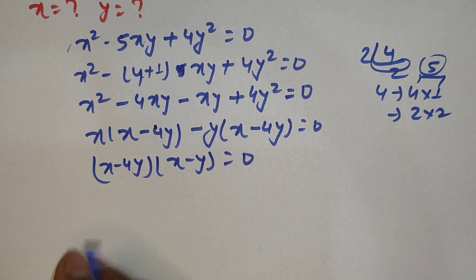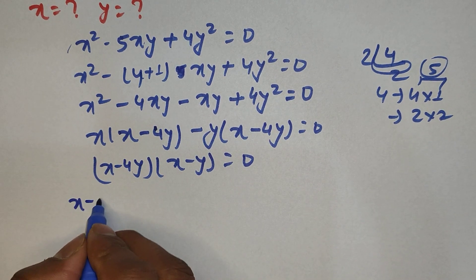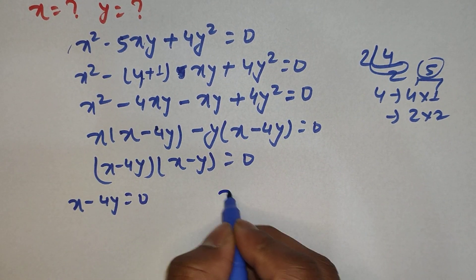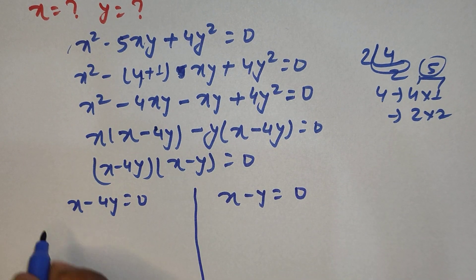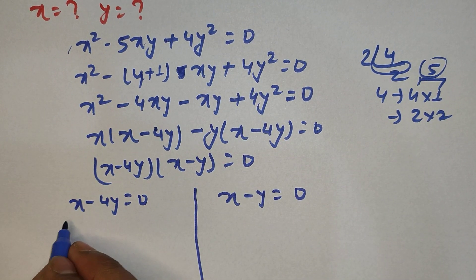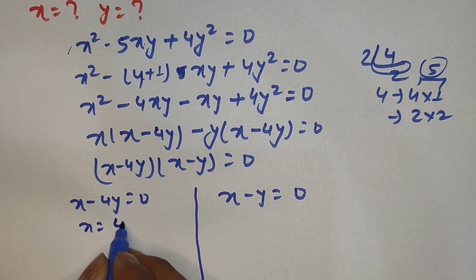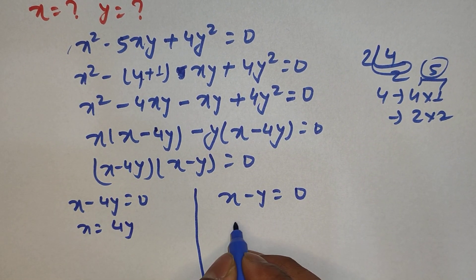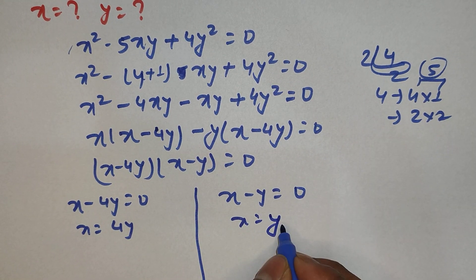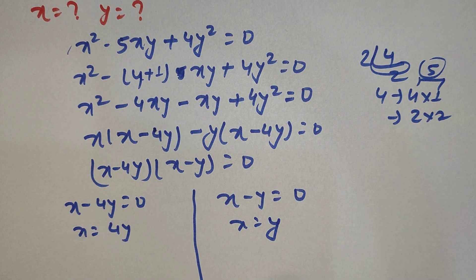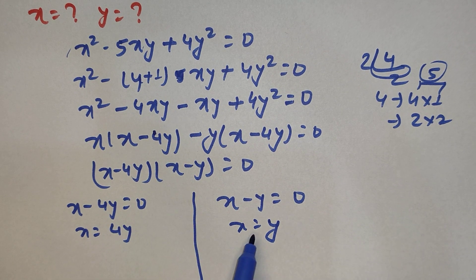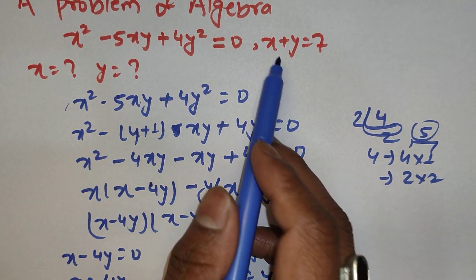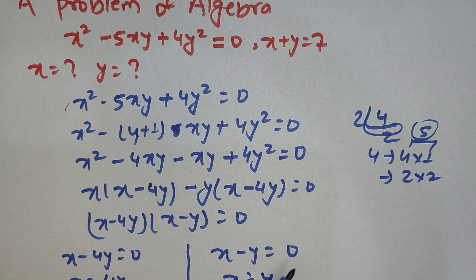From here we get two cases: either x minus 4y equals 0, or x minus y equals 0. So from the first case we get x equals 4y, and from the second case we get x equals y. We are now going to substitute these values into the equation x plus y equals 7.